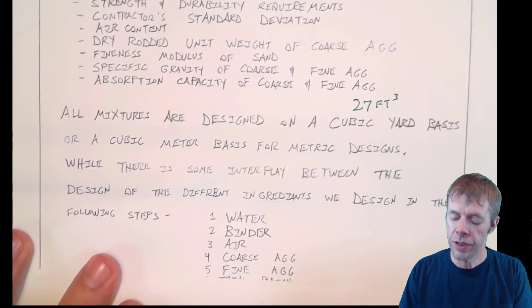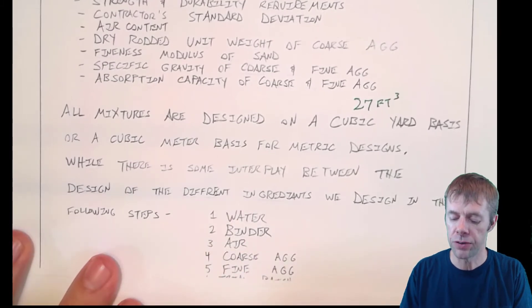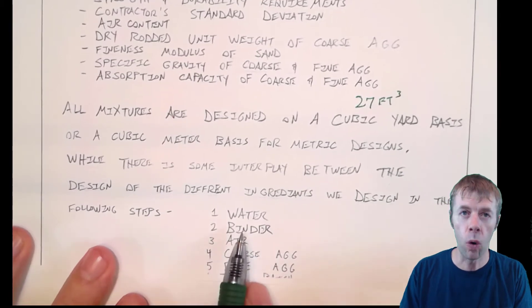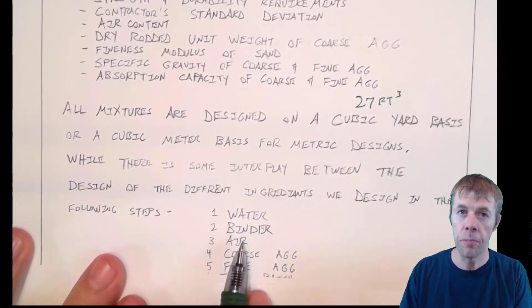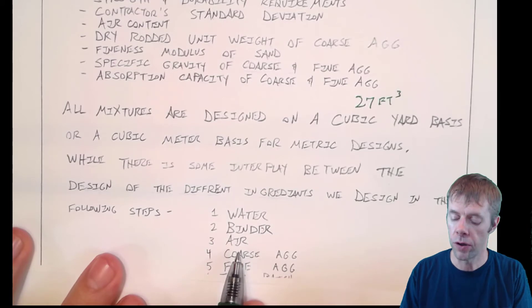So while there's interplay between the design of the different ingredients, we usually do this in the following steps. We determine the amount of water, the binder, the air volume or air content,